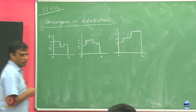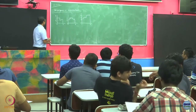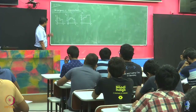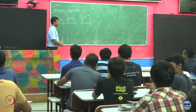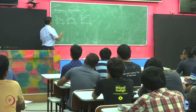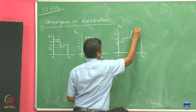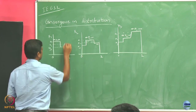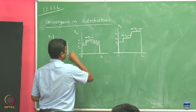Let us recall the definition of the unit interval probability space we defined earlier. We have three random variables defined on this unit interval probability space. This is x1, this is x2, and this is x3. All these random variables take only three possible values a1, a2, a3, and the widths p1, p2, p3 are the same.